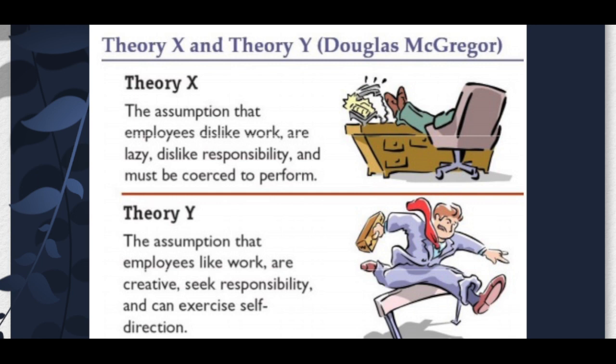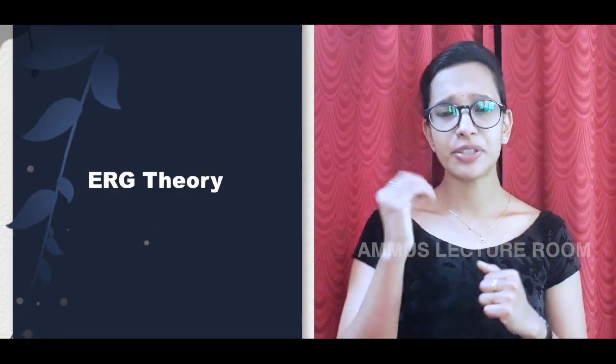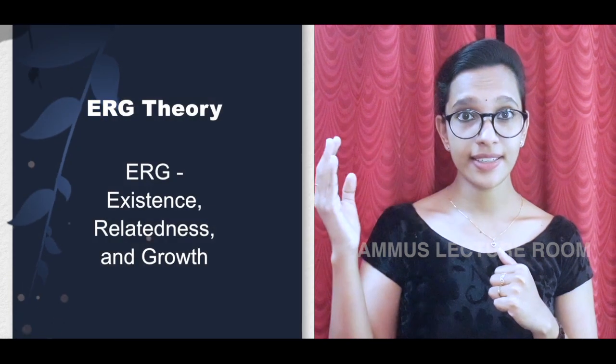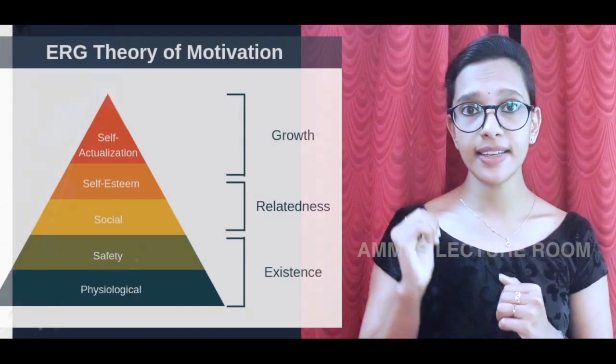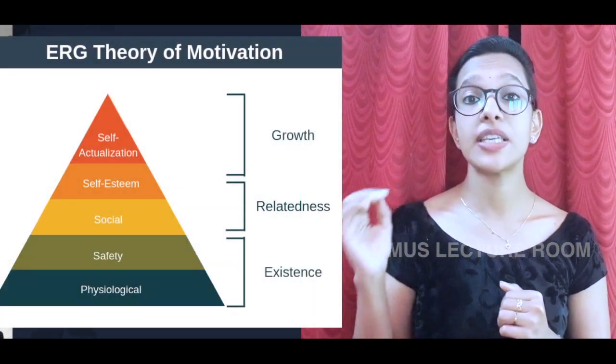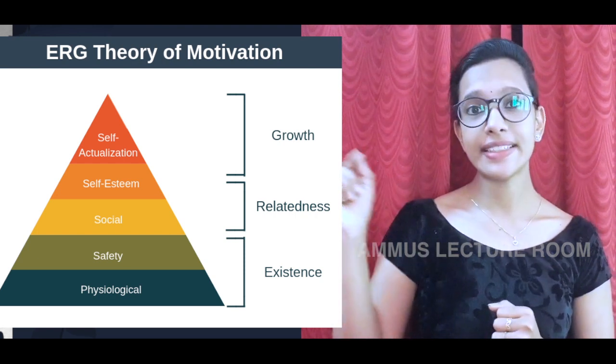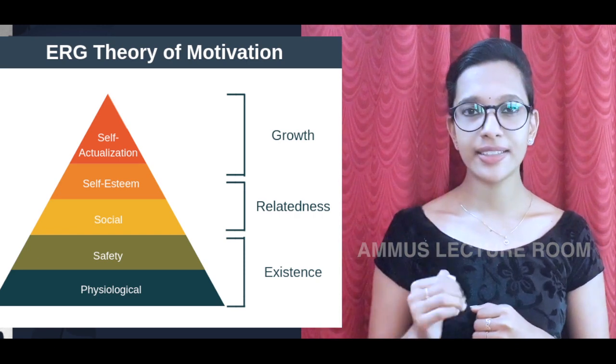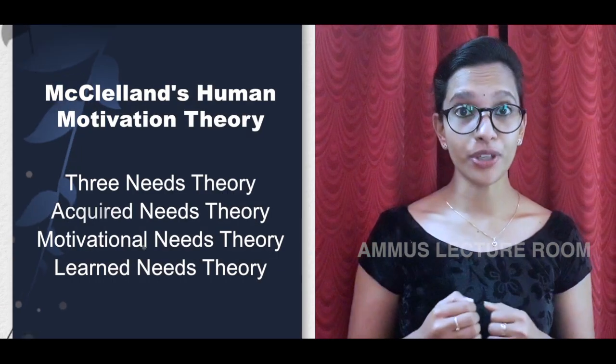Another motivational theory is the ERG Theory. ERG stands for Existence, Relatedness, and Growth. This theory simplifies Maslow's hierarchy into three basic needs: Existence needs correspond to physiological and safety needs; Relatedness needs correspond to social and esteem needs; and Growth needs correspond to self-actualization.